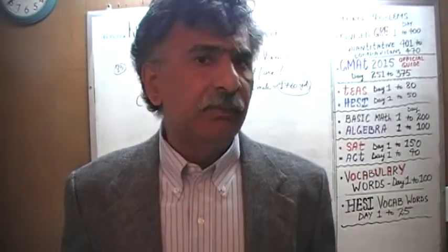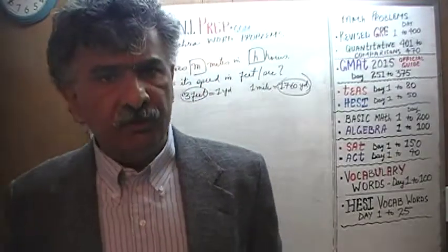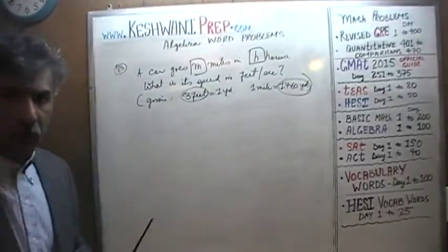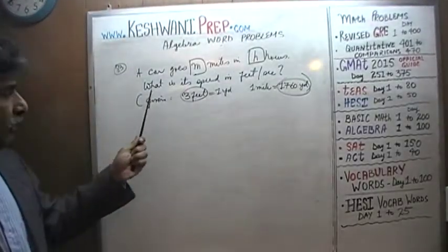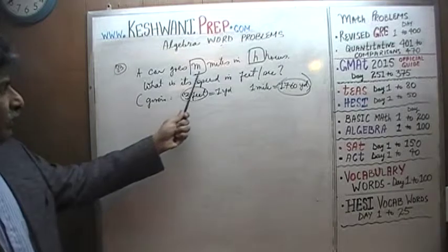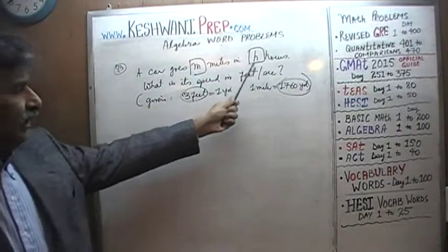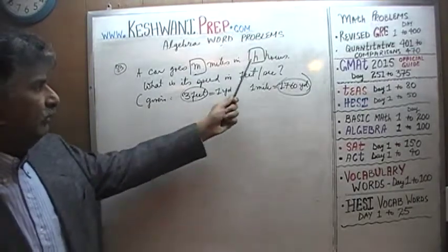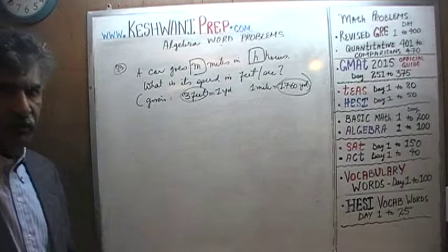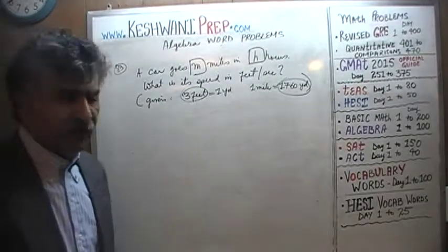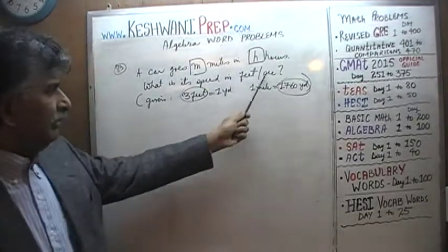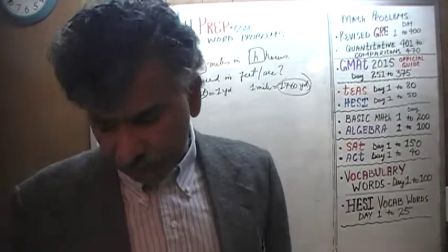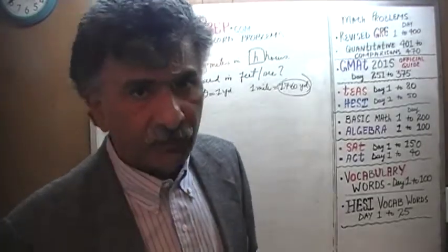Today we will do problem number 83 and 84. Problem number 83 is already on the blackboard. We are told that a car goes m miles in h hours — not one hour, not m miles per hour, but m miles in h hours. The question is: what does it translate into in feet per second? What speed does it translate to in feet per second?